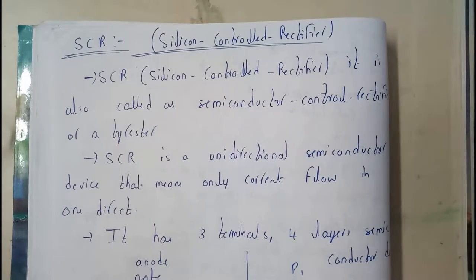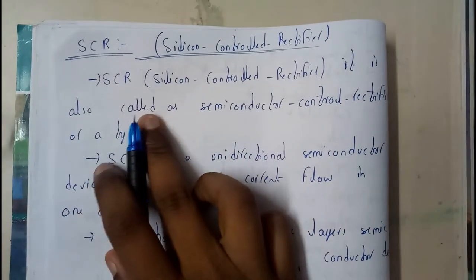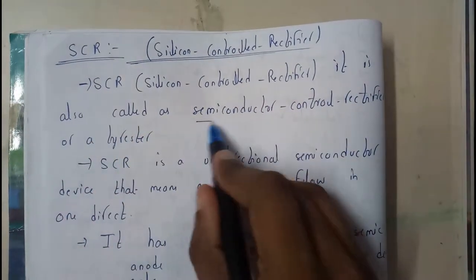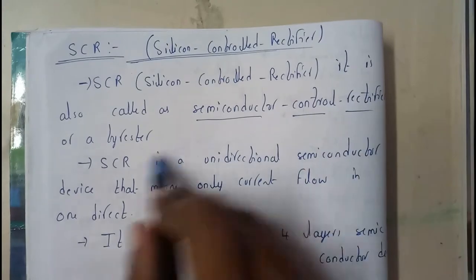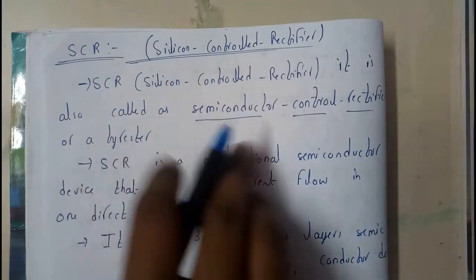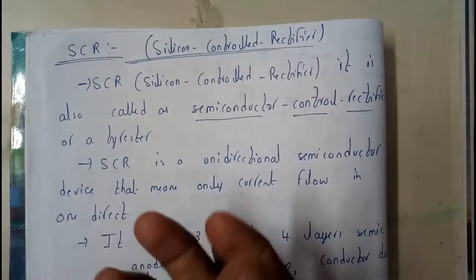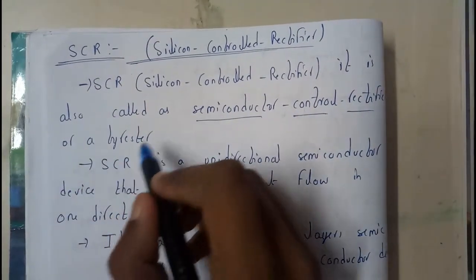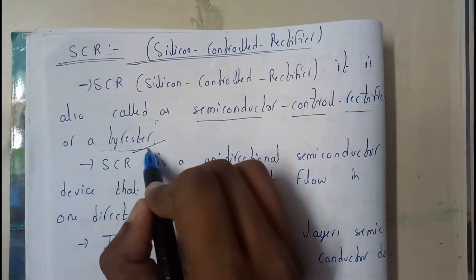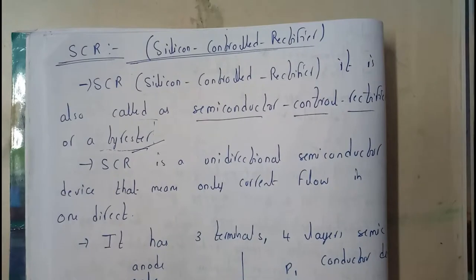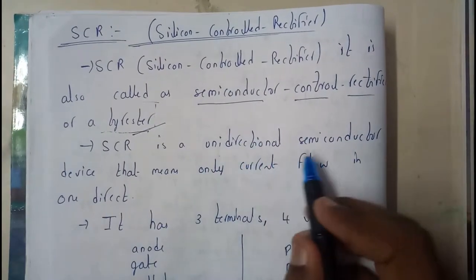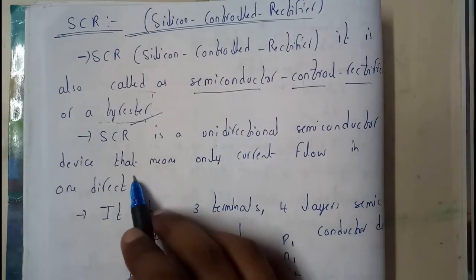SCR is a Silicon Control Rectifier. It is also called a Semiconductor Control Rectifier — since silicon is a semiconductor. Another name for it is Thyristor. SCR is a unidirectional semiconductor device, meaning current flows in only one direction.